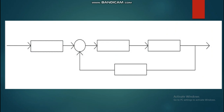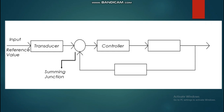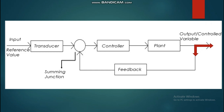Let's have a look at the closed-loop configuration. Starting with the input, also referred to as the reference value, the transducer converts the input into a form that can be understood by the controller. The controller then controls the reaction of the plant. The plant provides the output or control variable, which is monitored by the feedback transducer. The feedback sends the signal back to the summing junction as negative, while the input signal is taken as positive.